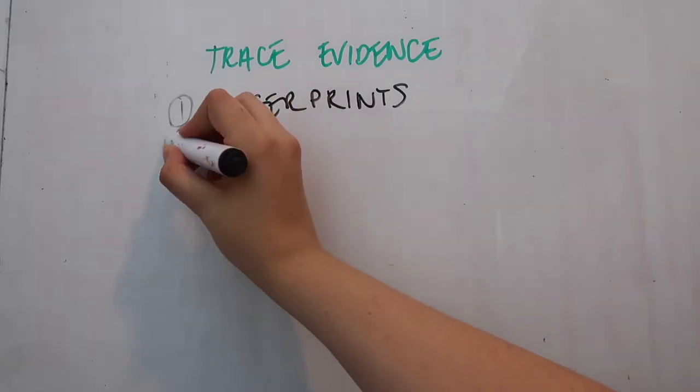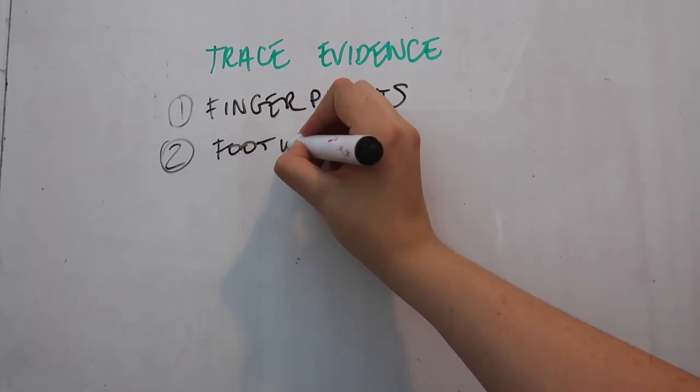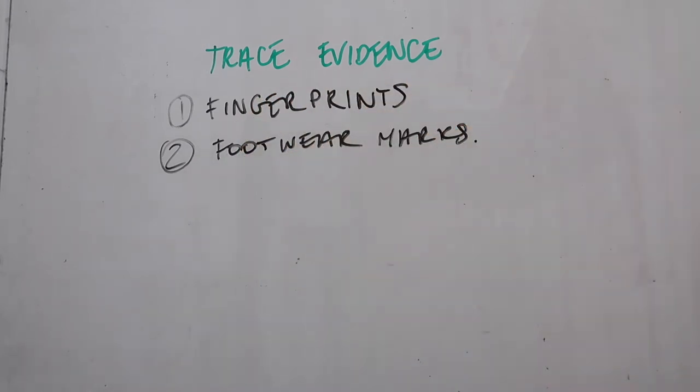The second example of trace evidence is footwear marks. Footwear marks or footprints are similar to fingerprints because they can be quite difficult to detect if you can't see them. However, if you have a three-dimensional print — such as walking along the beach and leaving a footprint in the sand — these three-dimensional footwear marks can actually be cast using plaster.